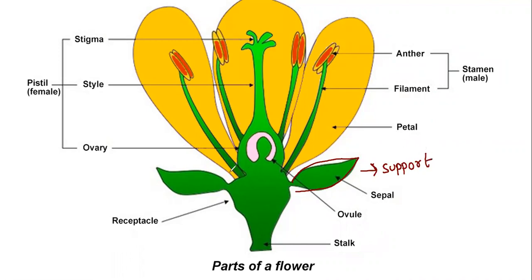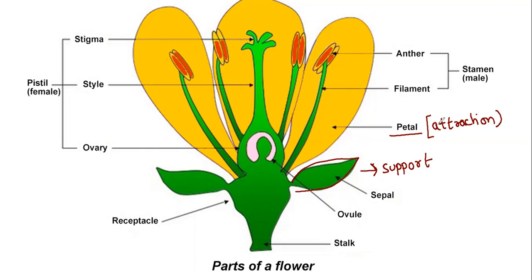And here this colorful part, the yellow thing, these are known as petals. They are meant for attraction. They also cover the reproductive parts of the flower.